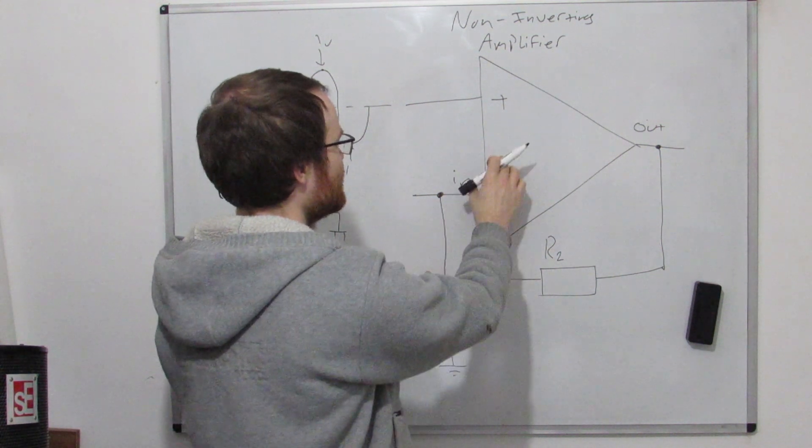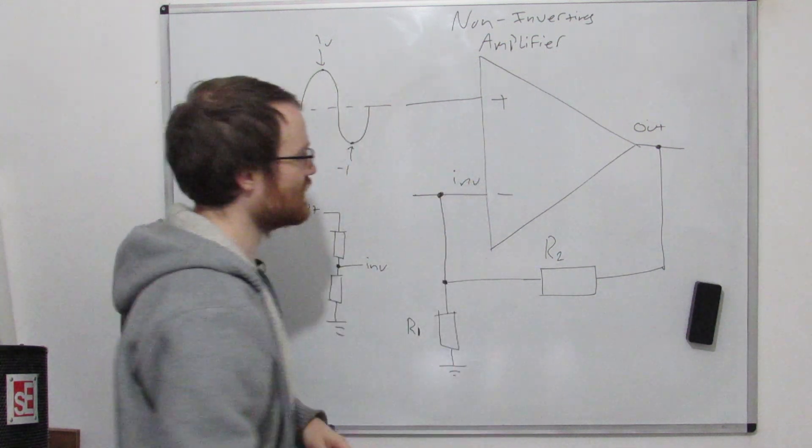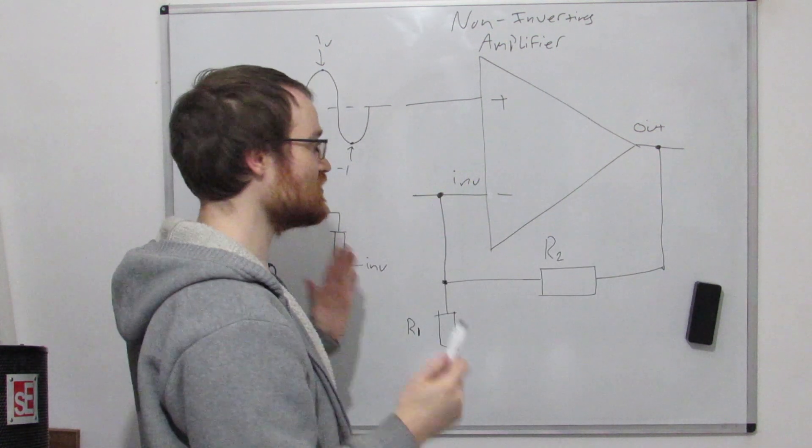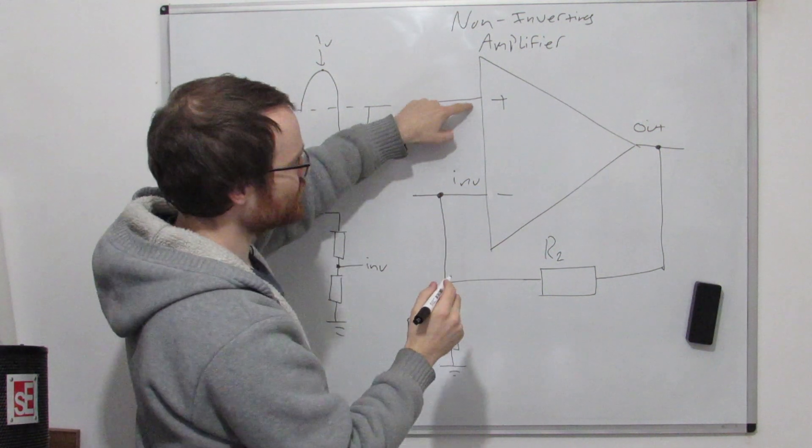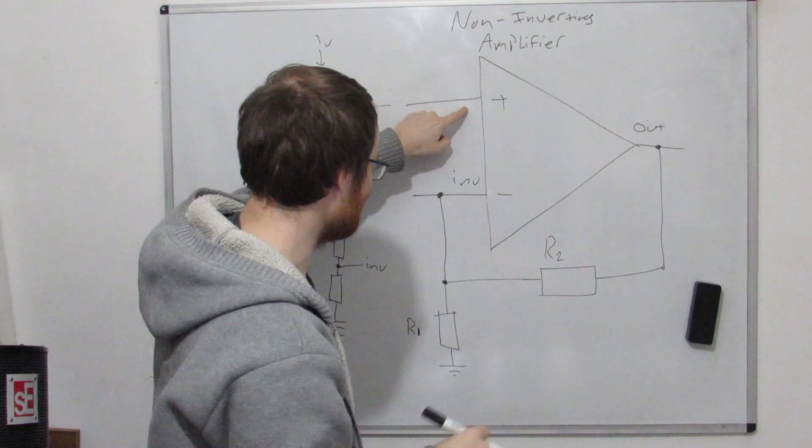Then we can see that it's the ratio of these two resistors is going to set the voltage at this point, which is then going to be what's fed back into here. So the output is going to do what it can to make sure that the voltage at this point here is the same as this point here, remember our golden rule from before.